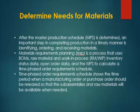Management must determine the needs for materials in a production environment. After the master production schedule is determined, an important step in completing production in a timely manner is identifying, ordering, and receiving materials. Material requirements planning is a process that uses BOMs, raw material and work-in-process inventory status data, open order data, and the MPS to calculate a time-phased order requirements schedule. The time-phased order requirements schedule shows the time period when a manufacturing order or purchase order should be released, so that the sub-assemblies and raw materials will be available when needed.